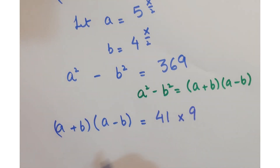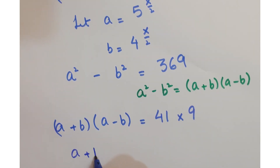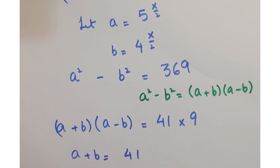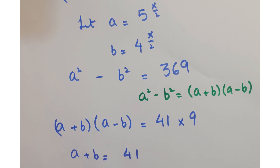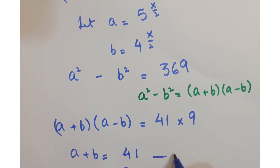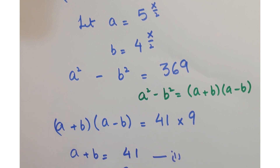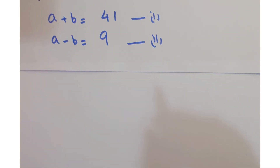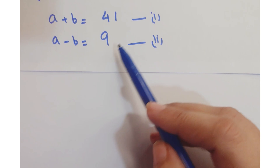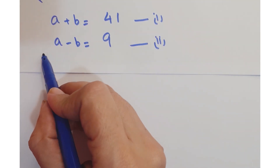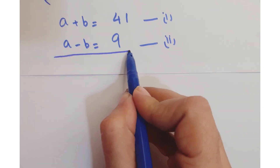Now we can equate these two as: a plus b equals 41, and a minus b equals 9. Call this equation 1 and this equation 2. We have two linear equations and we have to solve them simultaneously.